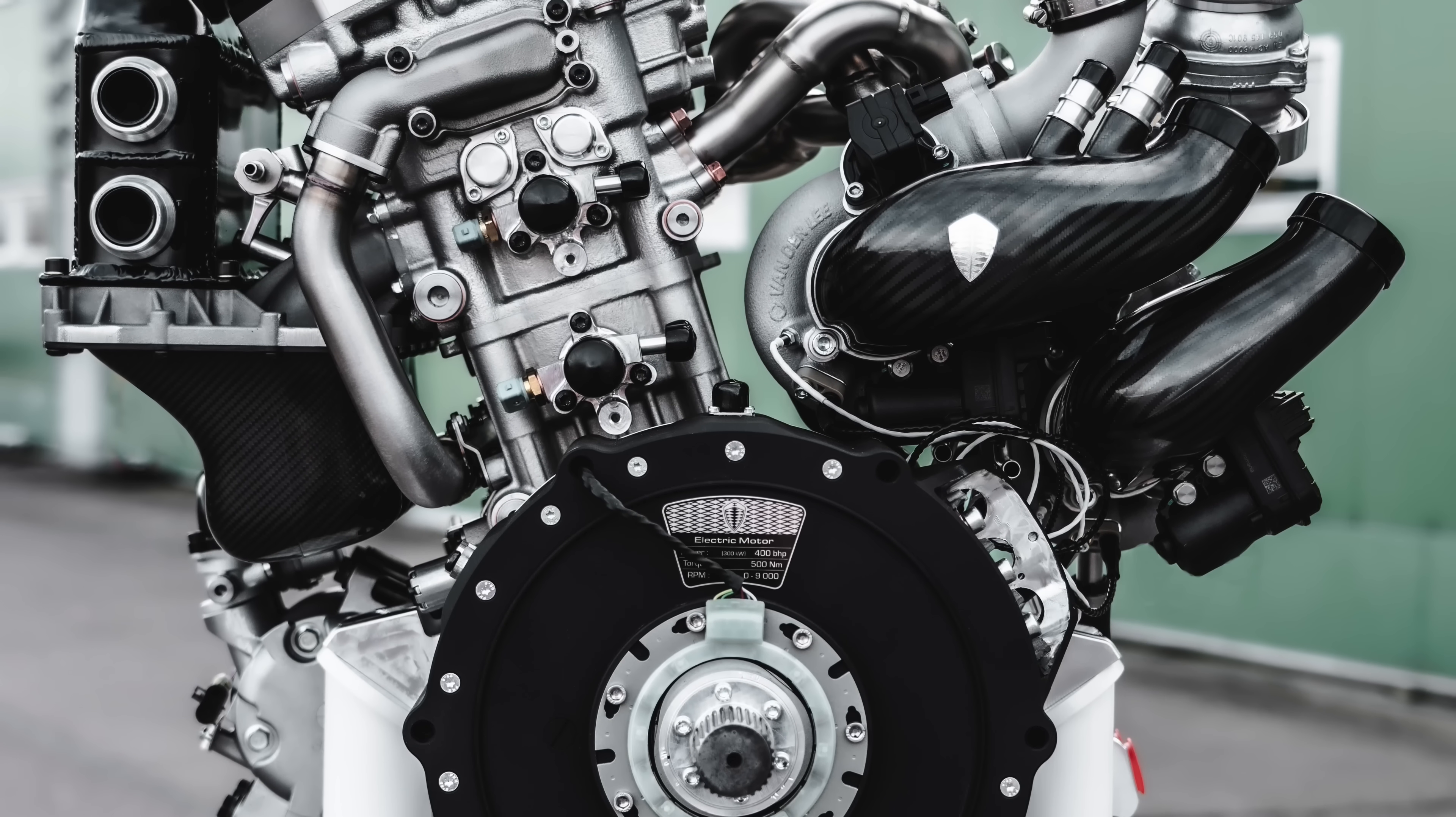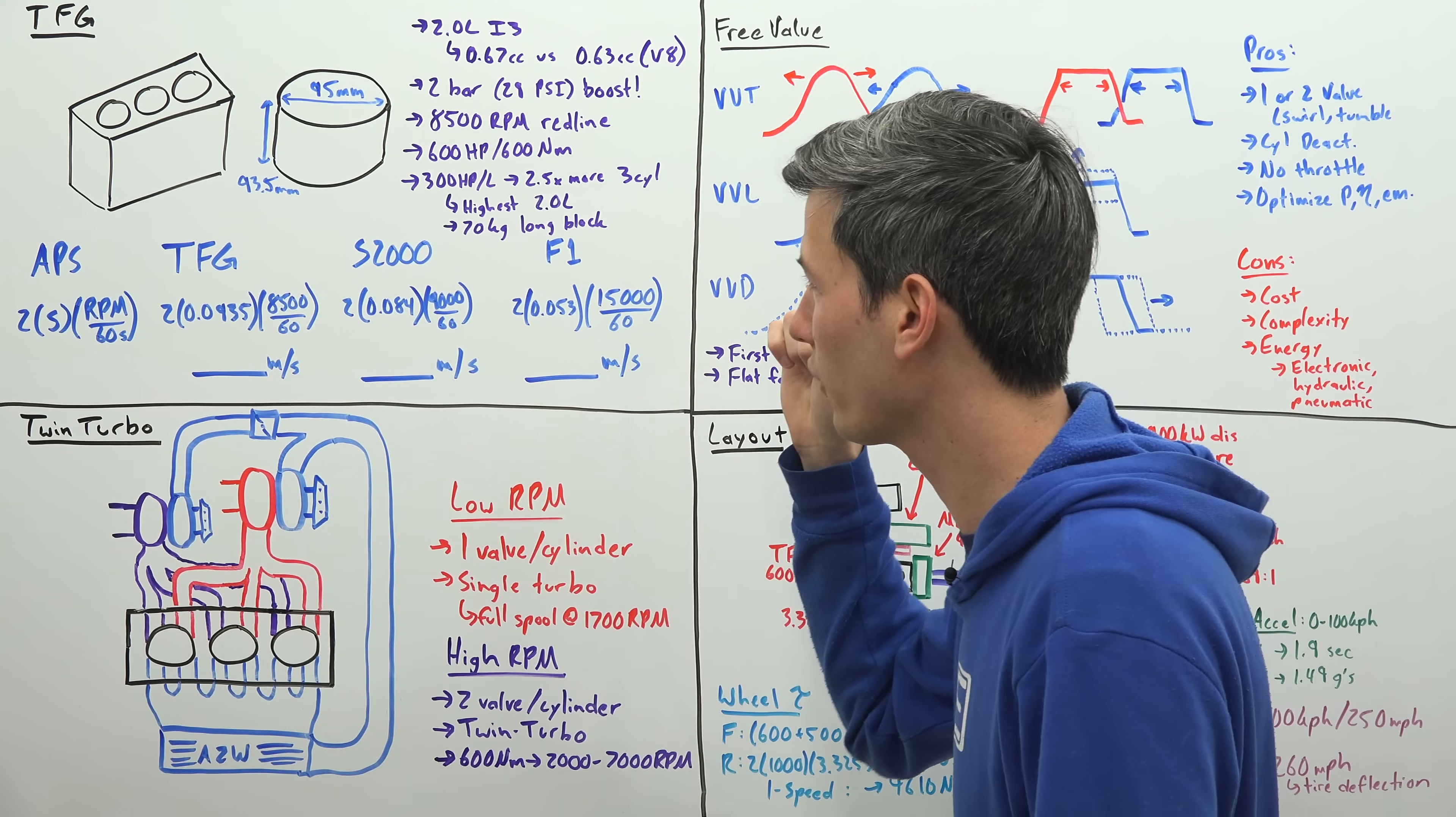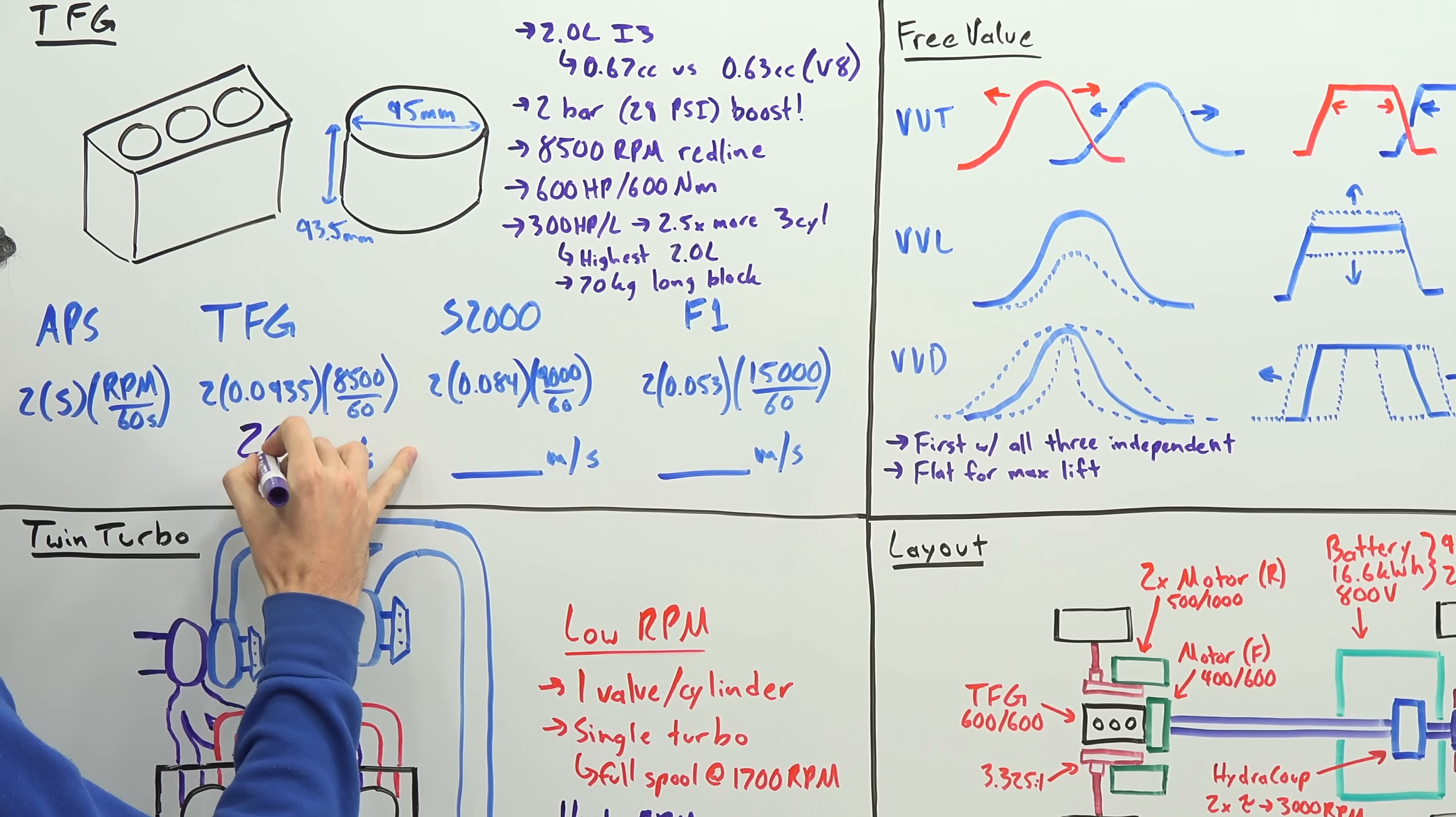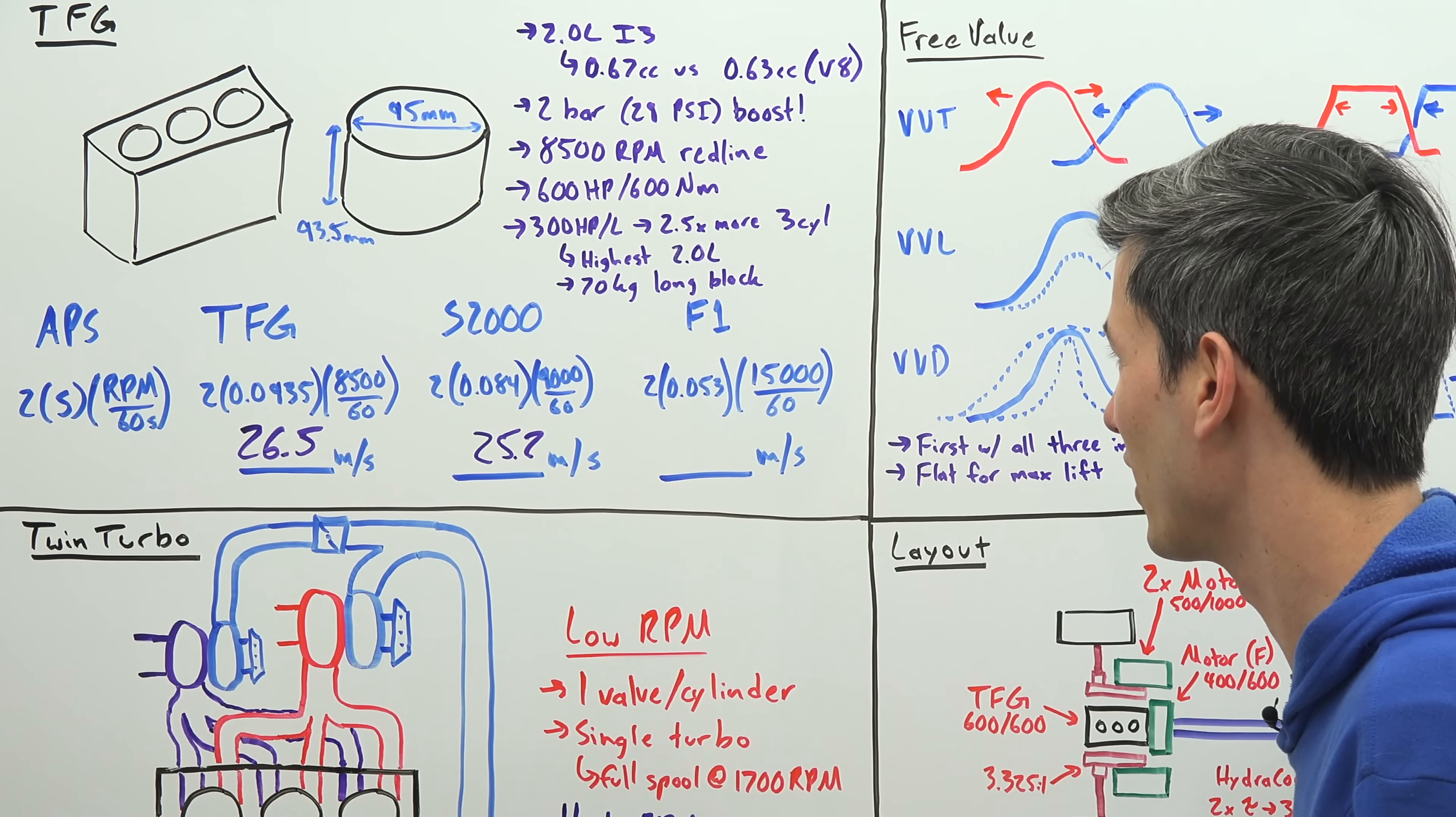Now one of the other things I thought was pretty interesting when looking at these specifications is this has a stroke of 93.5 millimeters paired with a very high 8500 rpm redline. And combined, this is a bit unusual because that means the pistons are moving extremely quickly. Now we can calculate the average piston speed by taking 2, multiplying it by our stroke length, and multiplying that by our rpm divided by 60. And so if you do that for this tiny friendly giant engine, what you get is 26.5 meters per second. Now that may not mean much to you, but if we compare it to the Honda S2000, which revved all the way to 9000 rpm with a stroke of 84 millimeters, it has an average piston speed of 25.2. So this is faster moving pistons than the Honda S2000 engine, that F20C.